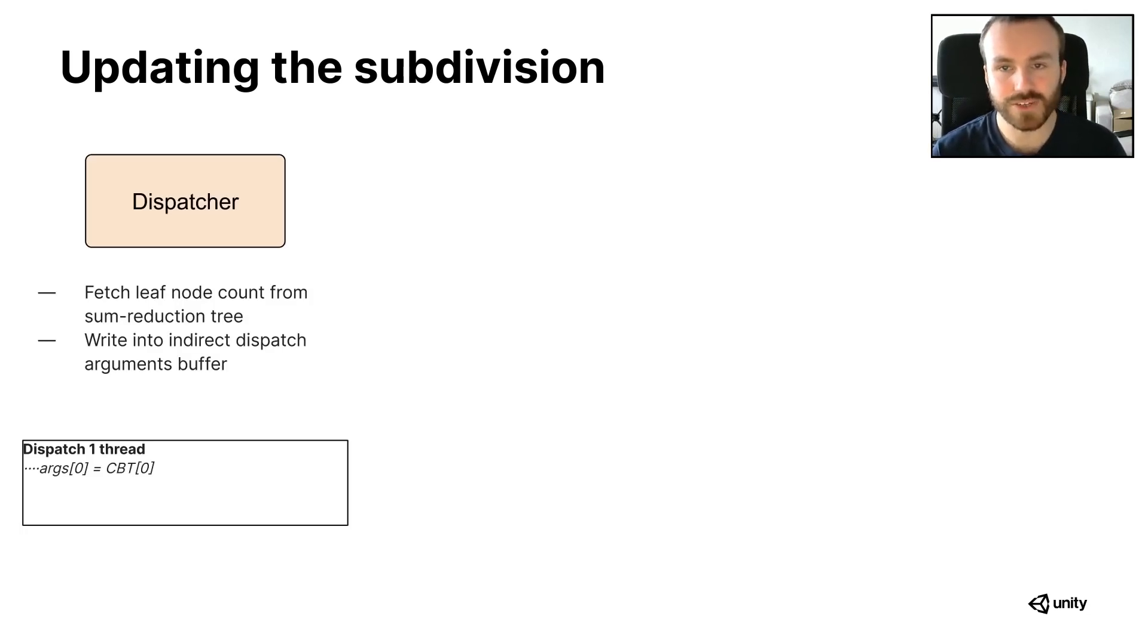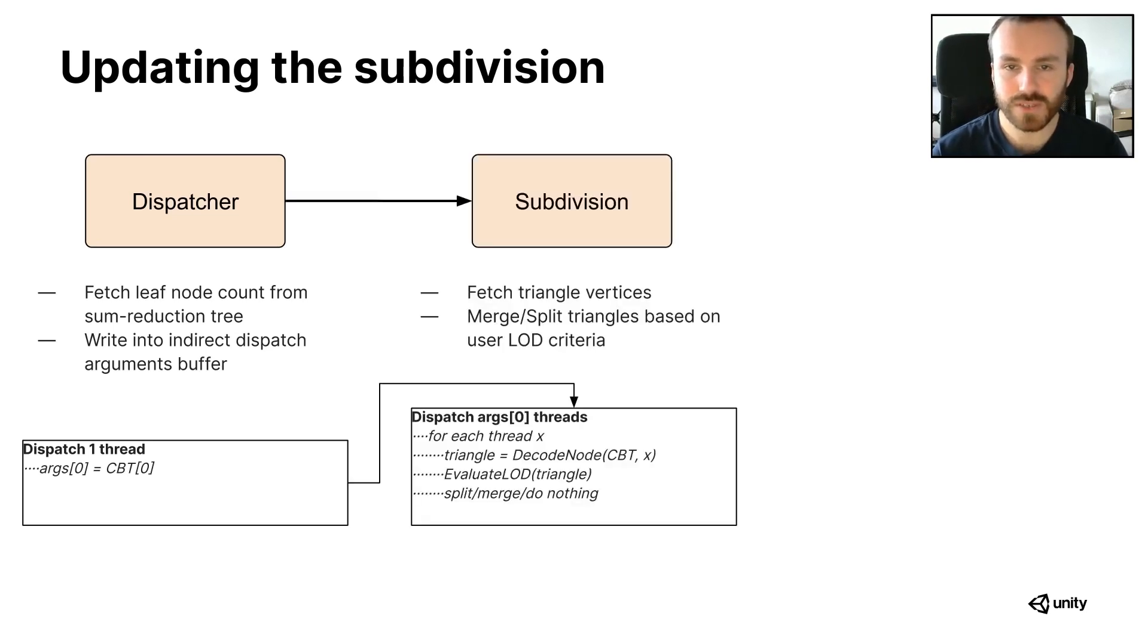First, because our concurrent binary tree lives in GPU memory, the initial step is to dispatch one thread to the GPU to read the root node of the sum reduction tree, which gives us the amount of leaf nodes in the subdivision, or active triangles, and we write this value into an indirect dispatch argument buffer, which we use for the next step to dispatch on the GPU one thread per triangle for the subdivision update.